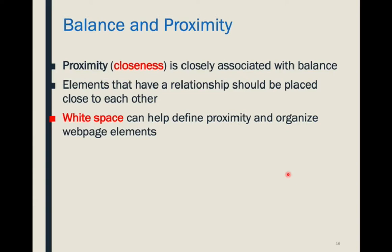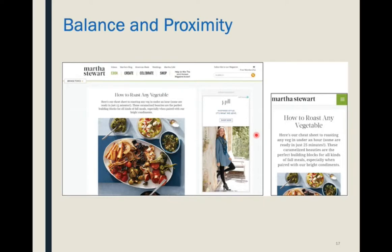Proximity: things that are close to each other are seen as a group. This is really important in a website — we can facilitate the quick, easy scannability so people can find the information they're looking for really quickly. White space enhances proximity. White space doesn't have to be white — we're just talking about the space between elements; you can have a black background and still refer to it as white space. Here on Martha Stewart's website, there's a lot of space that creates grouping or proximity, with ample white space above each group of information.